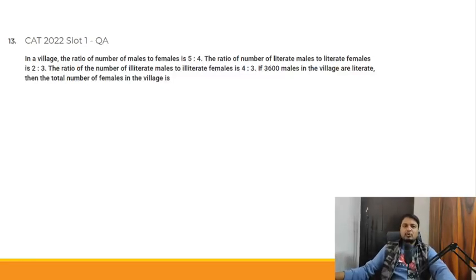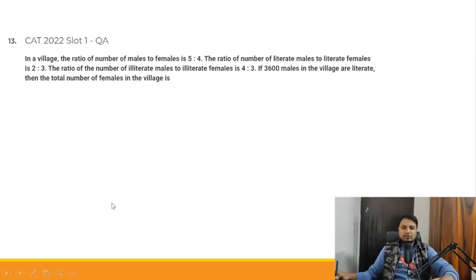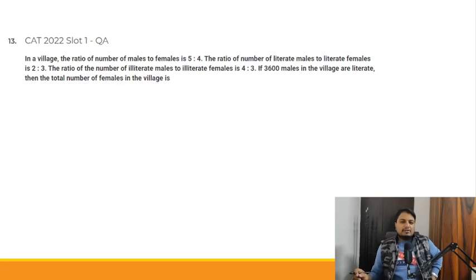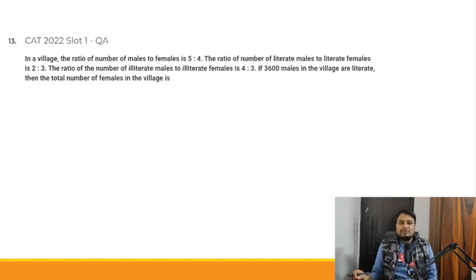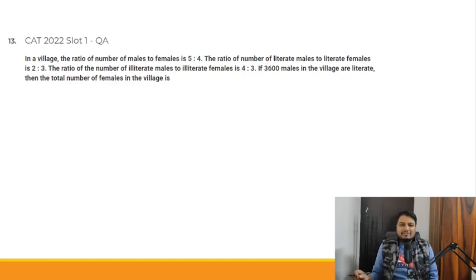CAT 2022 Slot 1, Question number 13. In a village, the ratio of the number of males to females is 5:4. The ratio of literate males to literate females is 2:3. The ratio of illiterate males to illiterate females is 4:3. If 3600 males in the village are literate, find the total number of females in the village.